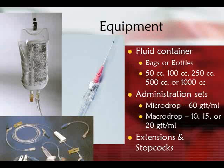Fluid containers in EMS are almost always plastic bags because they're less prone to breaking. Bottles are really only seen anymore if the field crew is starting a nitroglycerin IV drip. Bags come in sizes anywhere from 50 cc's to 1000 cc's — they even make 3000 cc bags. If you need to give a person a lot of fluid, you need the 1000 cc bags; if you just need a route open or to give a small medication, 100, 250, or 500 is enough.